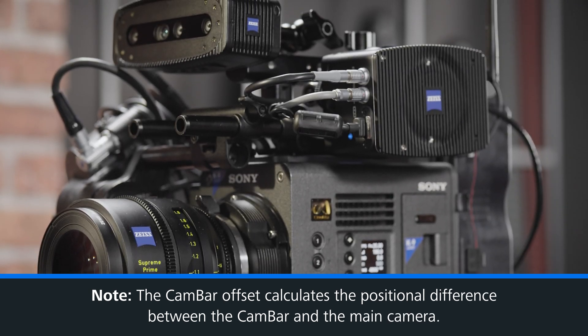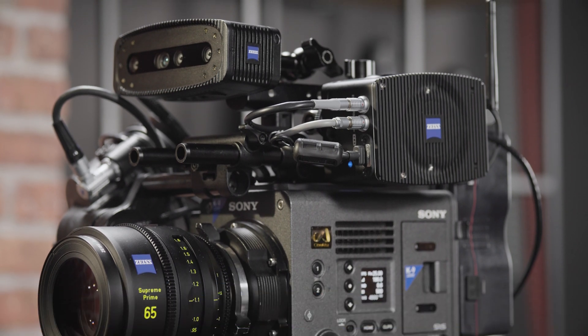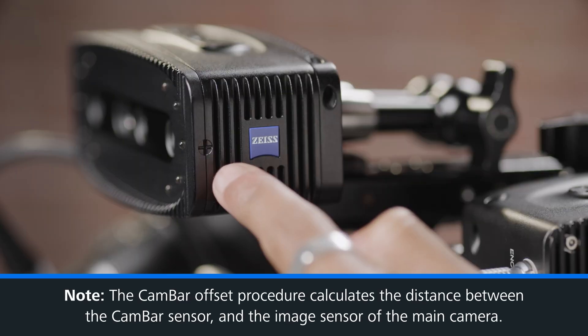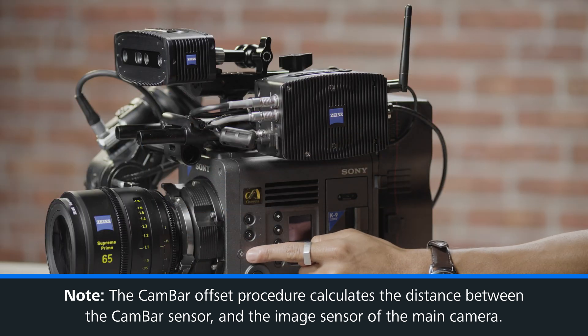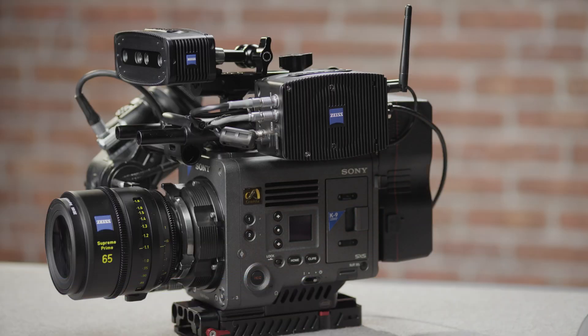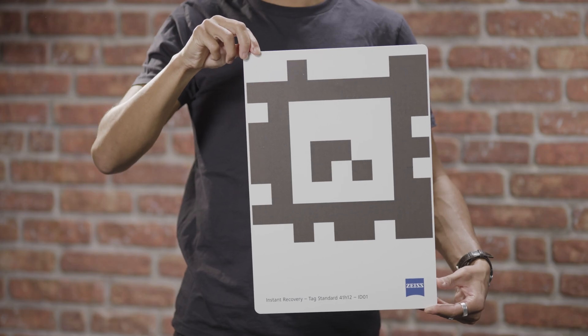What is the CanBar offset and why is it important? The CanBar offset calculates the positional difference between the CanBar and the main camera. It is essential that these two devices know exactly where they are in relation to one another at all times. So when the main camera pans, tilts or translates in a direction, the CanBar understands exactly where it has moved. This is why the CanBar is always mounted directly to the main camera body. The CanBar offset procedure works out the distance between the CanBar sensor and the image sensor of the main camera. The fiducial marker, as seen here, is used as a static reference point for both cameras to detect and to determine their distance from.